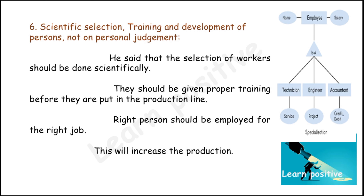These are the six principles of F.W. Taylor's scientific management. In the next video, we are going to see Henry's scientific principles. Henry is the next person who developed the scientific management system after F.W. Taylor. F.W. Taylor is the first one to introduce this scientific management system.